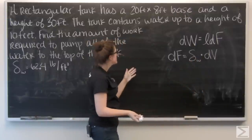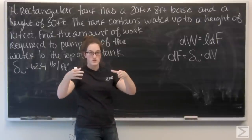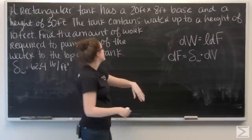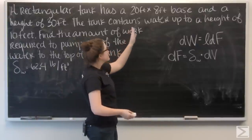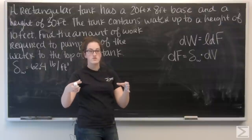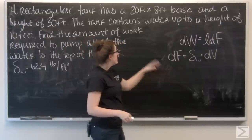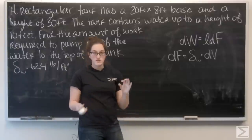So, df equals that weight volume times dv. Well, let's think about dv. Let's start thinking about a cross-sectional area, horizontally. So, the base is 20 by 8 feet. So, a cross-sectional area is going to be 160 feet squared.